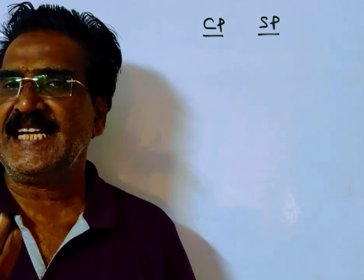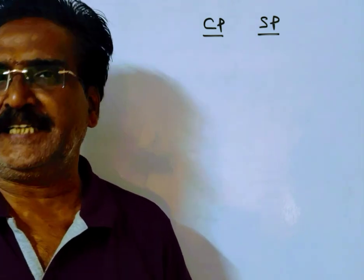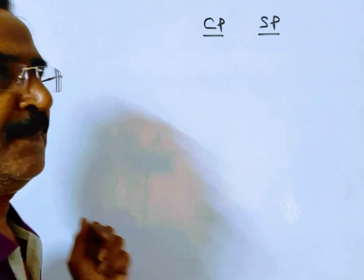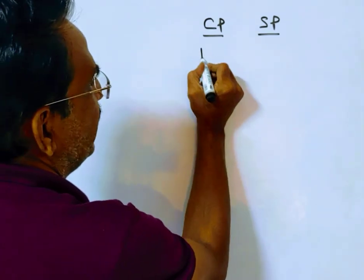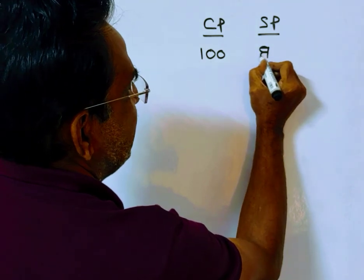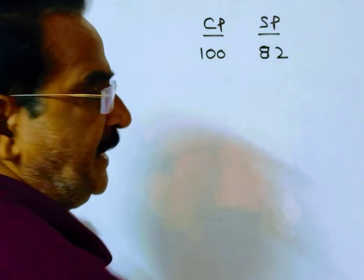Friends, the problem is given in the description box. A man sells an article for a loss of 18%. Selling at a loss of 18% means if the cost price is 100, the selling price must be 82.